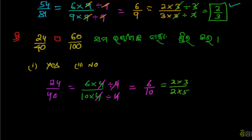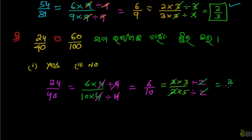But here we have 3 over always. How to do this — to count. 3.5 minus. Okay.